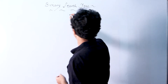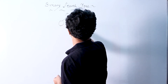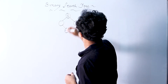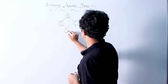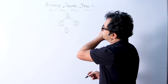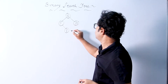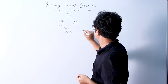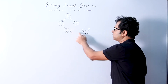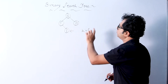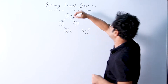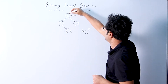Let me draw a binary search tree on the board. Suppose this is a binary search tree where the value at the root is 10, here suppose the value is 5, here suppose the value is 8, and here suppose the value is 15. So this is a binary search tree. Now, if I want to find the element 8 — that is, if the key value k is 8 — we will begin with the root node where the value is 10.